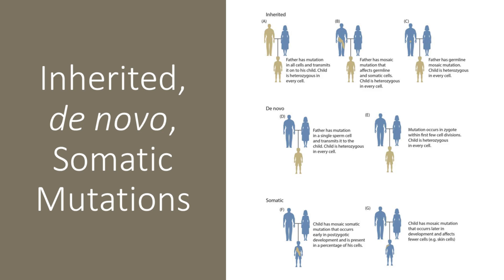Each of us also has over 70 de novo single nucleotide mutations that neither of our parents have. Many severe childhood neurological disorders, such as Rett syndrome, are caused by de novo mutations that disrupted critical genes.